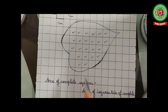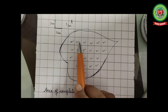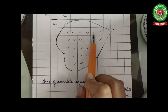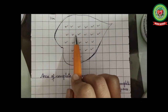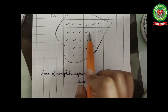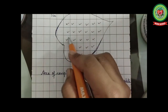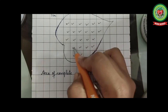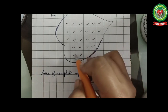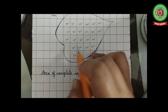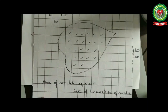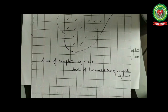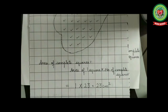The area of complete squares is given as: area of 1 square multiplied by number of complete squares. The area of 1 square is 1 cm². Counting the complete squares: 1, 2, 3, 4, 5, 6, 7, 8, 9, 10, 11, 12, 13, 14, 15, 16, 17, 18, 19, 20, 21, 22, and 23. So the area of complete squares comes to 1 × 23 = 23 cm².